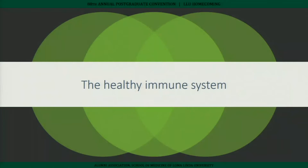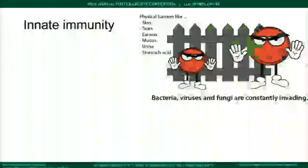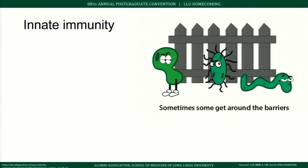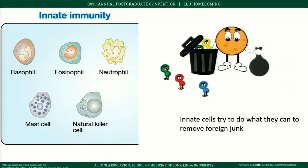Starting with the healthy immune system: we have innate and adaptive immunity. In the innate immune system, bacteria, viruses, fungi, and all foreign antigens are constantly trying to invade. Physical barriers like skin, earwax, tears, urine, and stomach acid block them, but sometimes bad stuff gets through and our innate cells try to eliminate it.